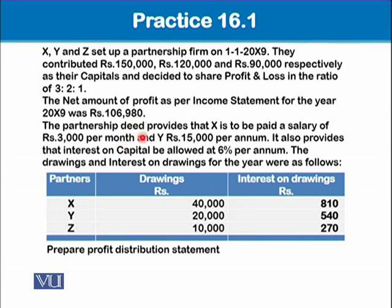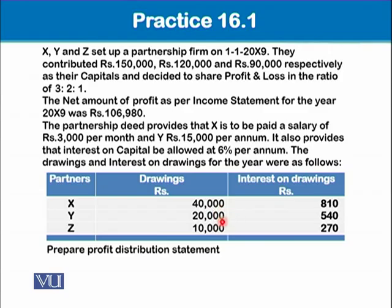The partnership deed provides that X is to be paid a salary of 3,000 per month, and Y gets 15,000 per annum. Be attentive when reading — one figure is given in months and the other per annum, otherwise you will make a mistake in the examination. Interest on capital is allowed at 6% per annum. The drawings for the year were: X 40,000, Y 20,000, Z 10,000, and interest on drawings: 840, 540, and 270 respectively.